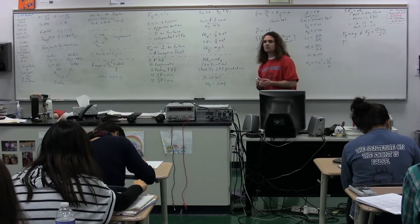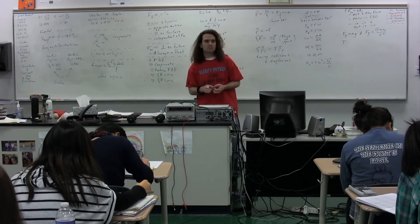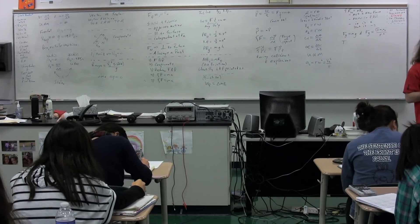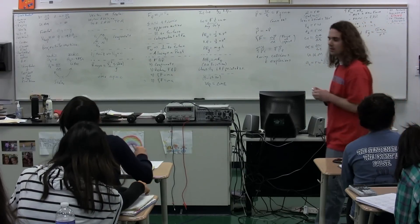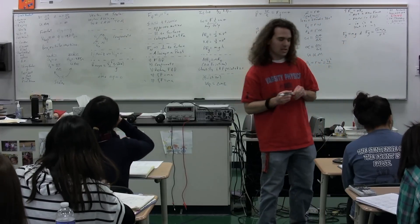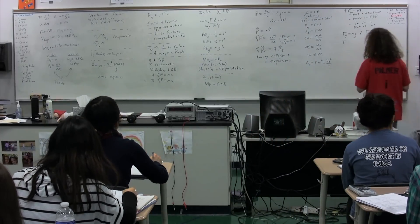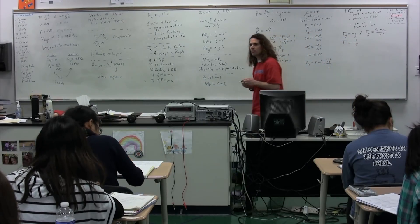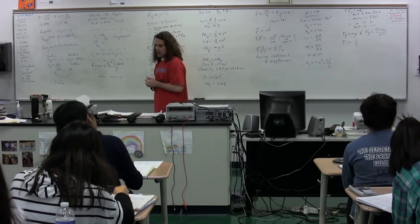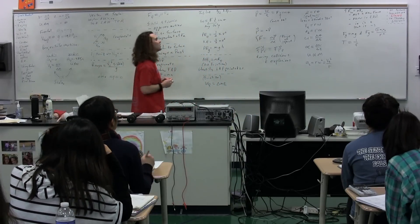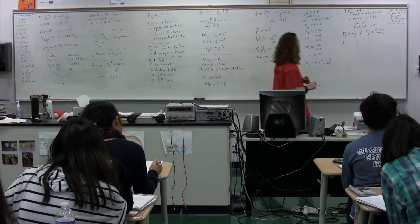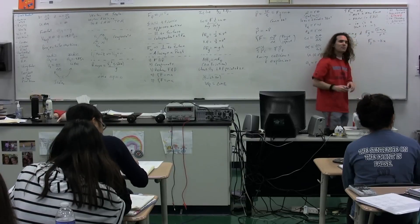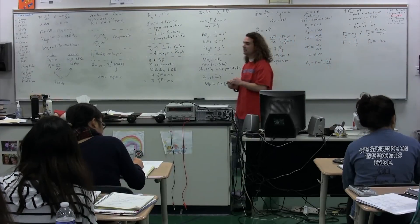Capital T stands for the period. What is the definition of the period, Emma? The time it takes for one full cycle. We have the period, which is equal to one over the frequency. What is the frequency? The number of cycles per second. We have F sub S, the force of the spring, equals negative K times X. We've already defined the spring constant and the displacement from the equilibrium position.